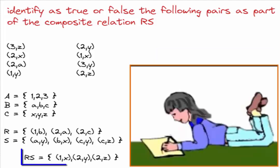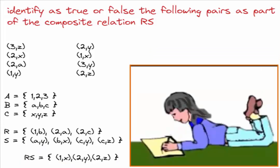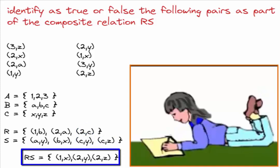First, we must have all the composite relation possible elements at hand to compare. Exists a way to go from 1 to X, from 2 to Y, and from 2 to Z. So, these are the pairs that can exist in the composite relation.